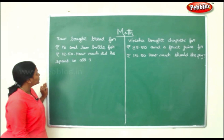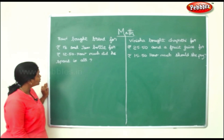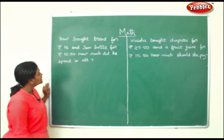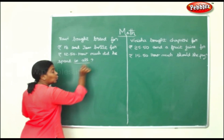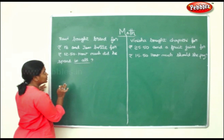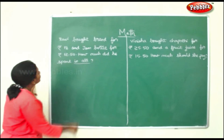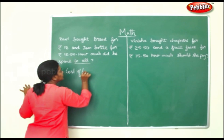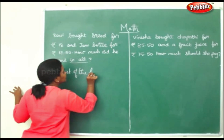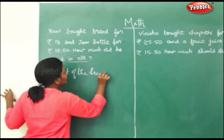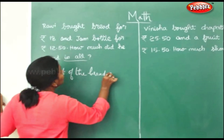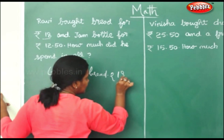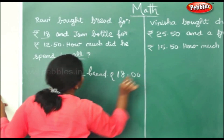Ravi bought bread for rupees 18 and a jam bottle for rupees 12 and 50 paise. How much did he spend in all? They are asking the total indirectly, so it is addition. Cost of the bread is rupees 18 — no paise, so I am putting 0, 0.